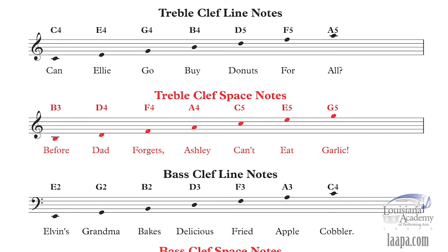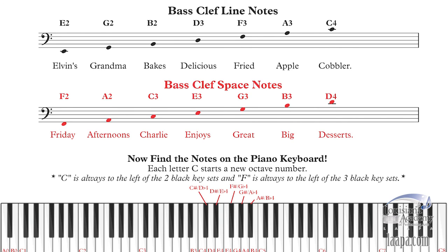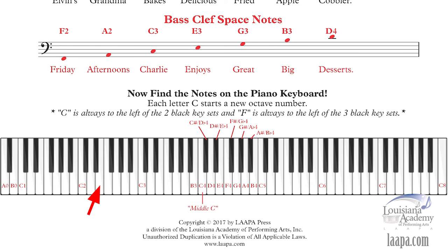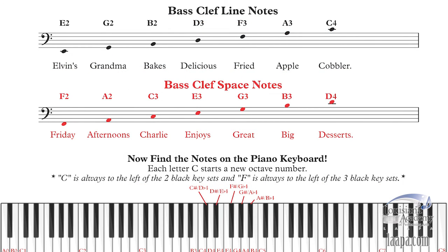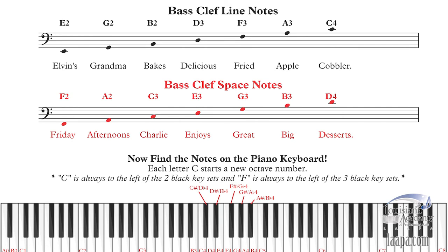We've covered the treble clef line and space notes, so let's look at the bass clef. For bass clef line notes, we start all the way down at E2. The phrase is: 'Elvin's Grandma Bakes Delicious Fried Apple Cobbler.' That gives us E, G, B, D, F, and so on. Who doesn't love a good apple cobbler? Go to the keyboard and find where these notes are, or find them on your instrument.